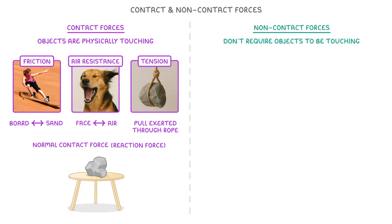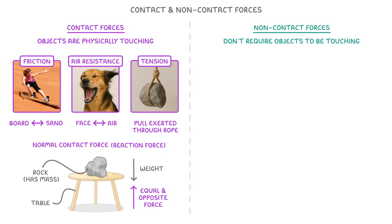In this picture, we can see a rock on a table. And because the rock has mass, it will be exerting a force downwards, which is its weight. To keep it in position, though, and stop it from falling, the table must be exerting an equal and opposite force upwards. And it's this force that we call the normal contact force.